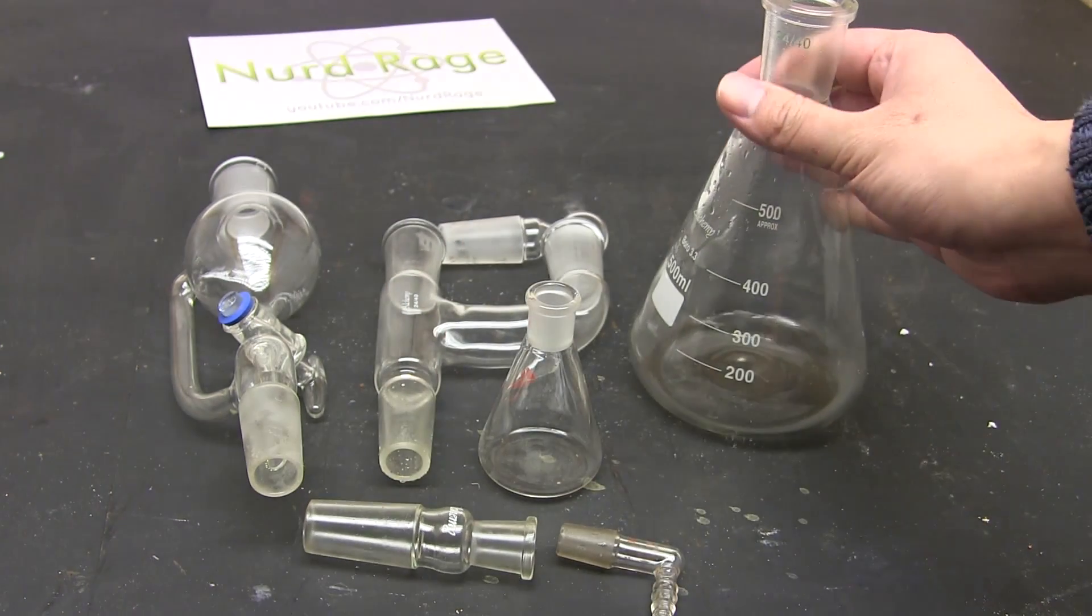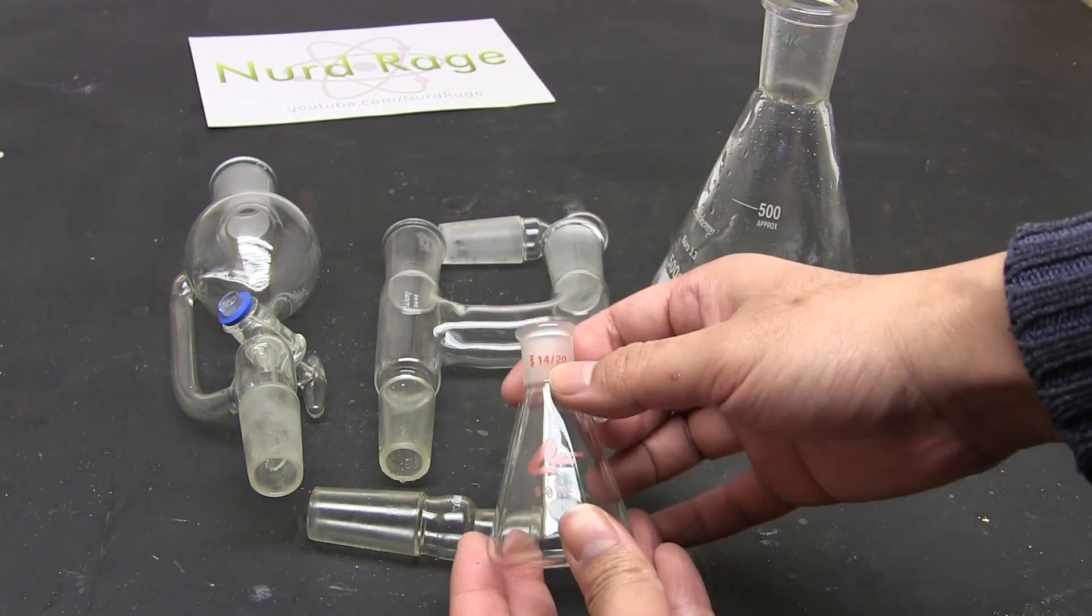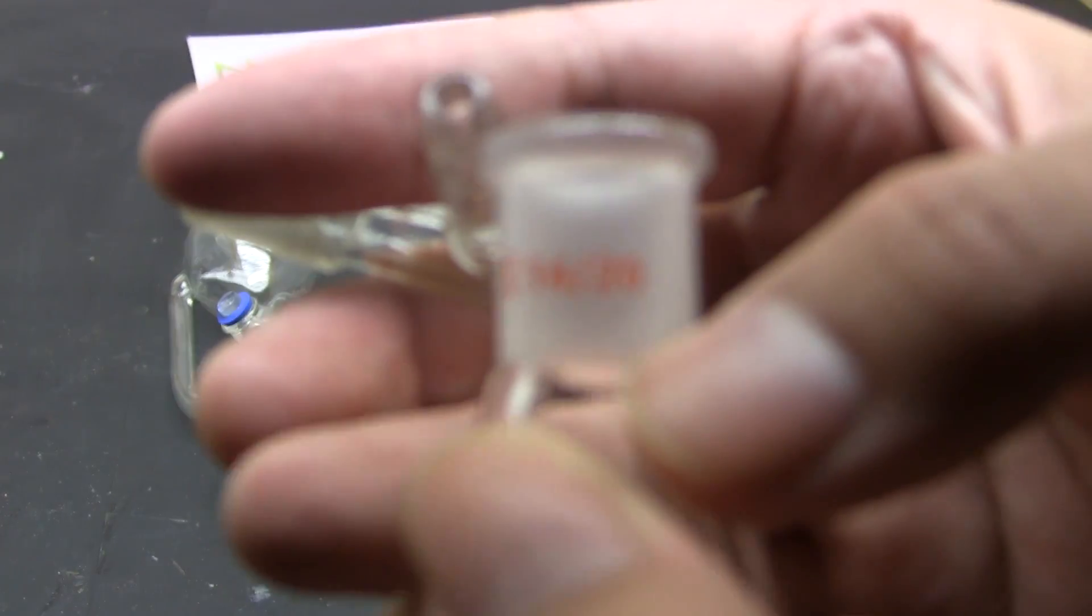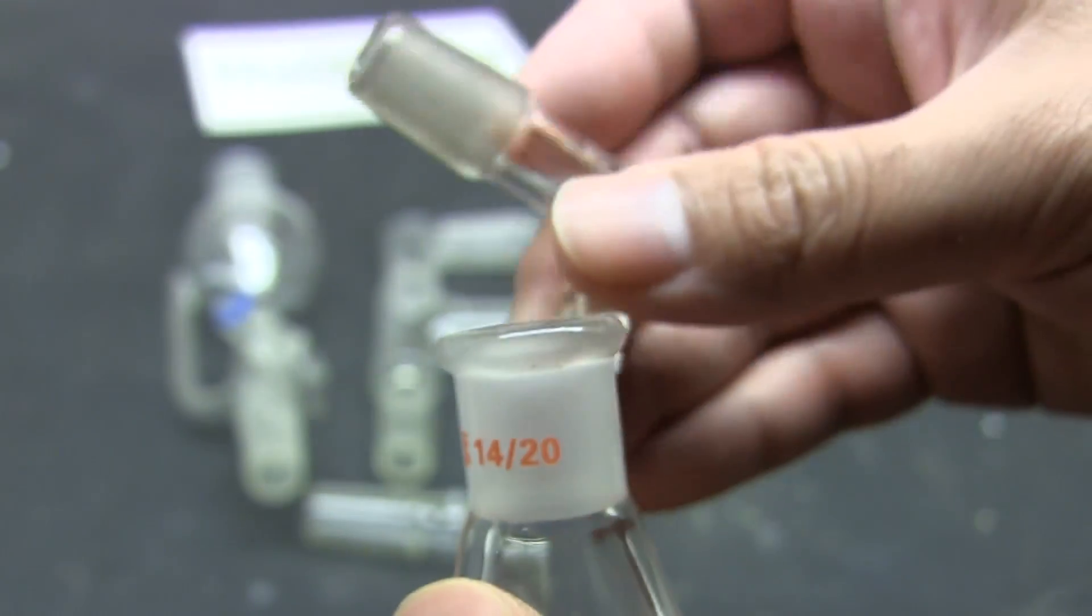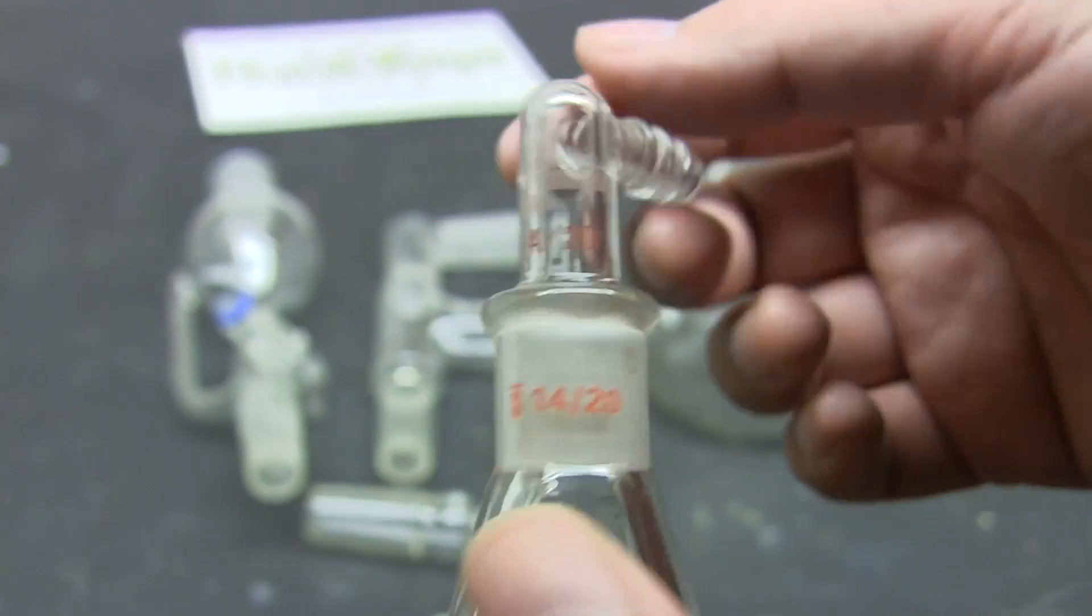I can mate this joint with any other piece of glassware of the right gender even if they're from completely different manufacturers thanks to the standard. Now 24/40 is a common standard for moderately sized glassware, and for smaller glassware there is the 14/20 standard. So pay attention to the joint size of the glassware you're buying to make sure it's compatible with your existing glassware.